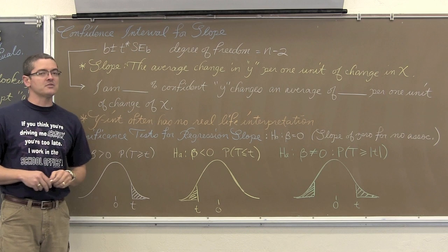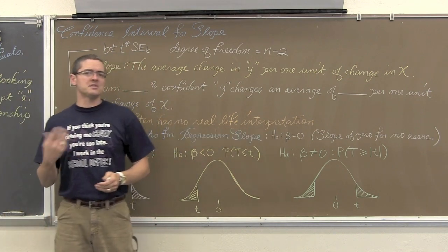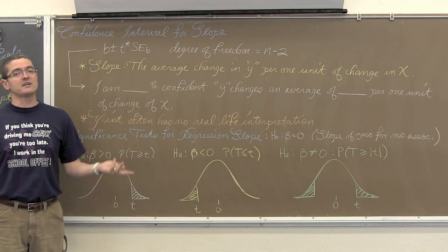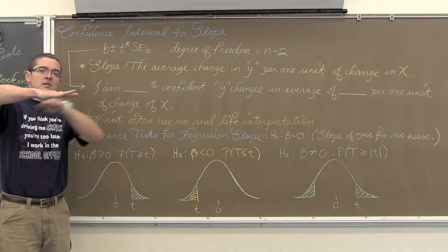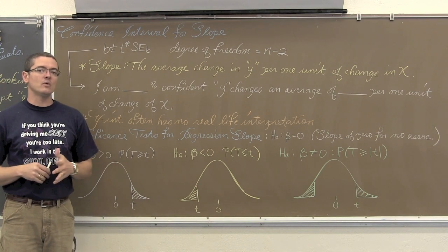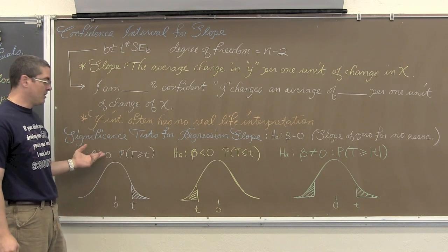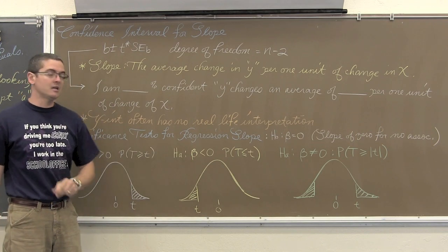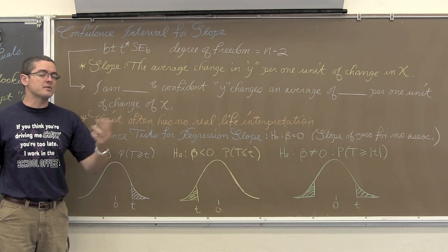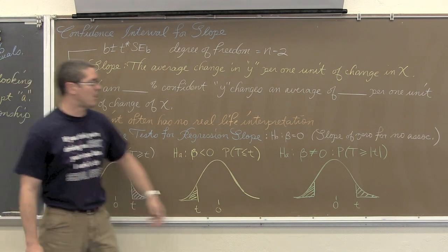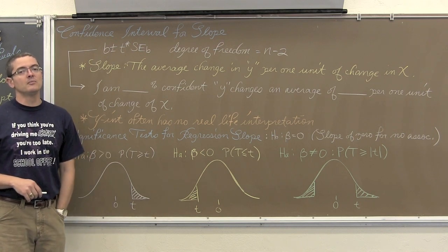For the significance test for the regression slope, H-sub-0 is set up as no association, no difference, no effect. If we are assuming no association, then x is changing and y is not — so H-sub-0 is beta equals zero, the population parameter for slope. Then H-sub-A might be that the slope is positive, negative, or simply that there is a difference — a two-sided test. In our upcoming example we will be looking for a slope which is negative.